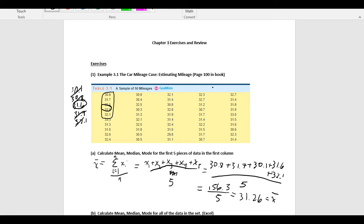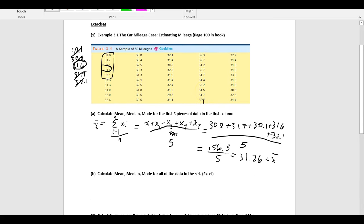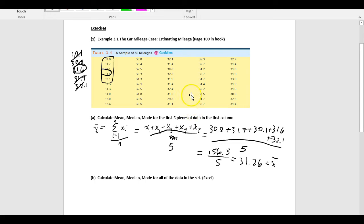And then the one thing that we'll note, because the mode needs to be the most frequent value, we actually don't have a most frequent value. They all occur the exact same number of times. So, we just say that there's no mode. And so, then we'll go on to B, calculate the mean, median, and mode for the whole dataset.